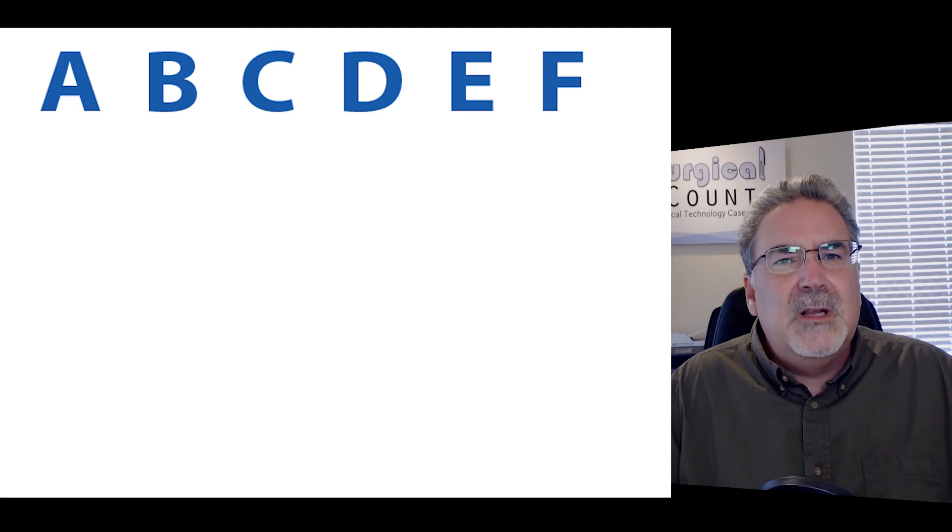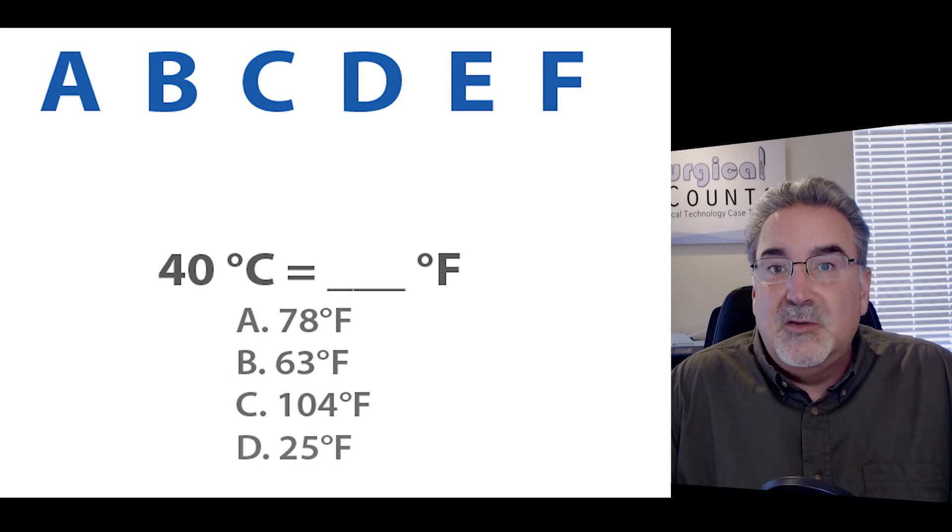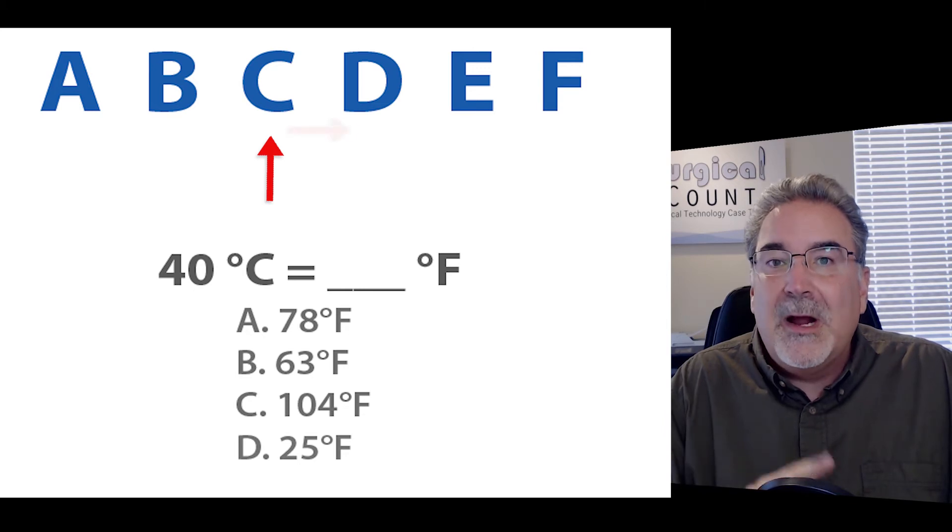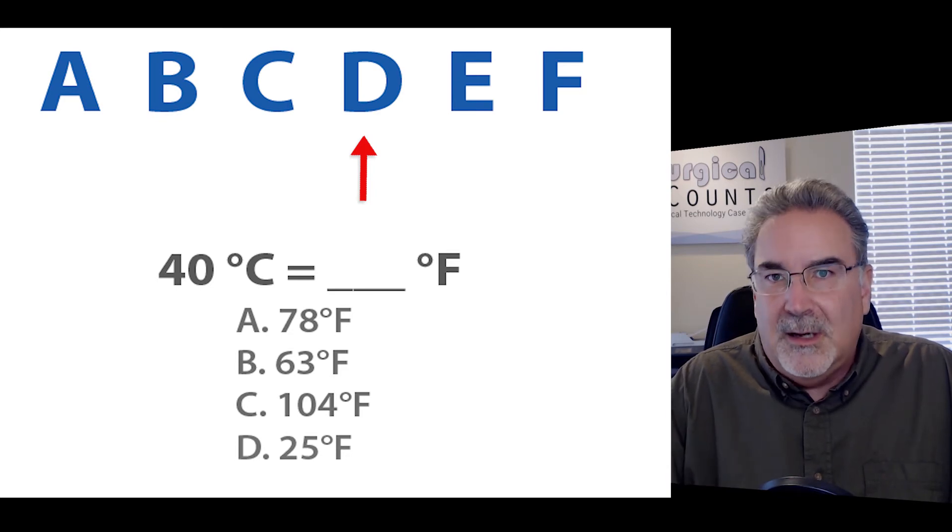But let's see if it really works out with other problems. Take a look at these. 40 degrees C is what in Fahrenheit? Well, 40, again, we're going from C to F. We're going up the letter scale. So the next letter is D. Are we going to divide or double? Because we're going up, we're going to double. So 40 doubled is 80.